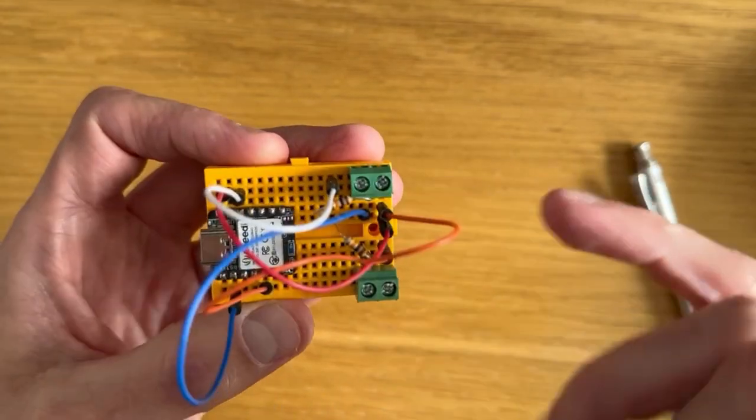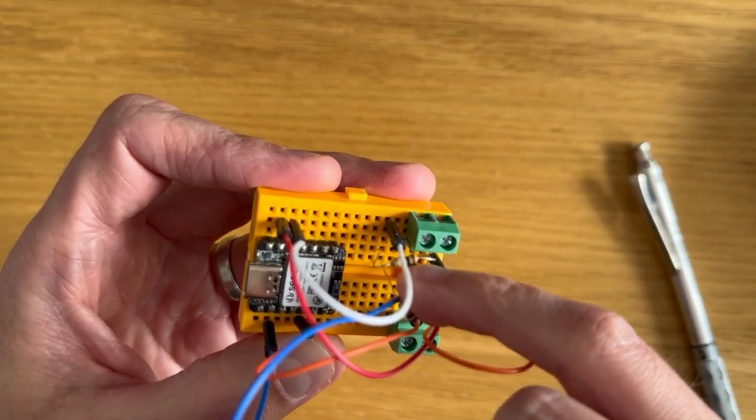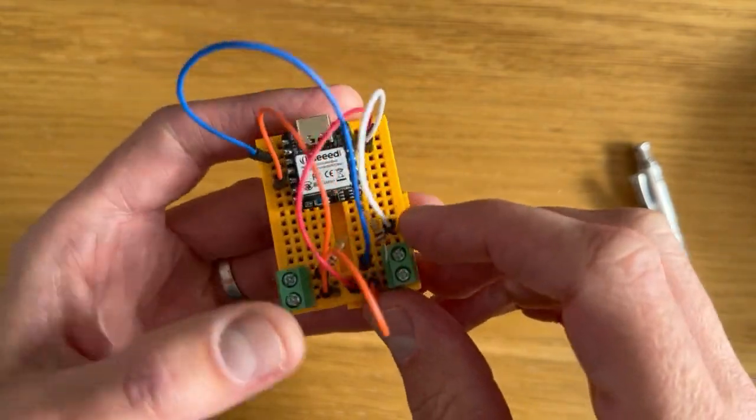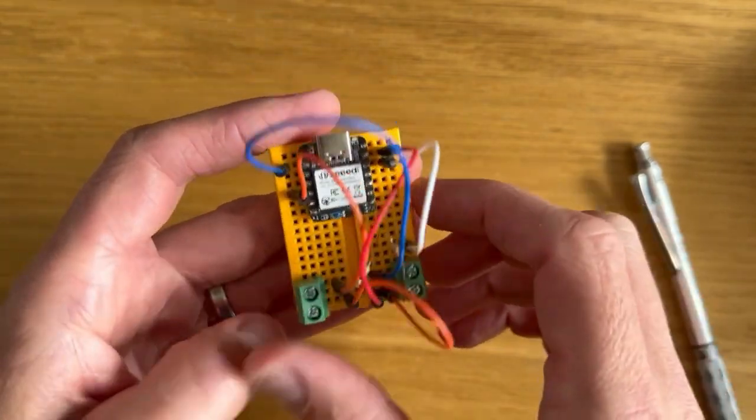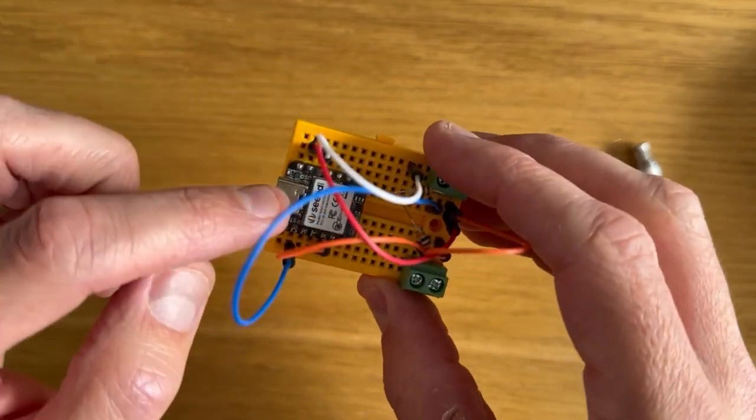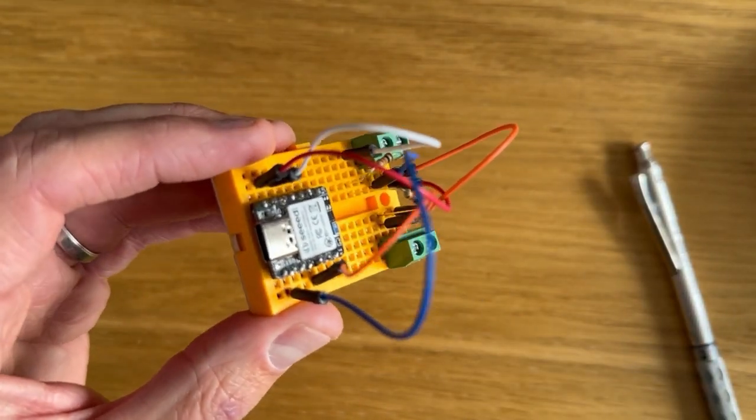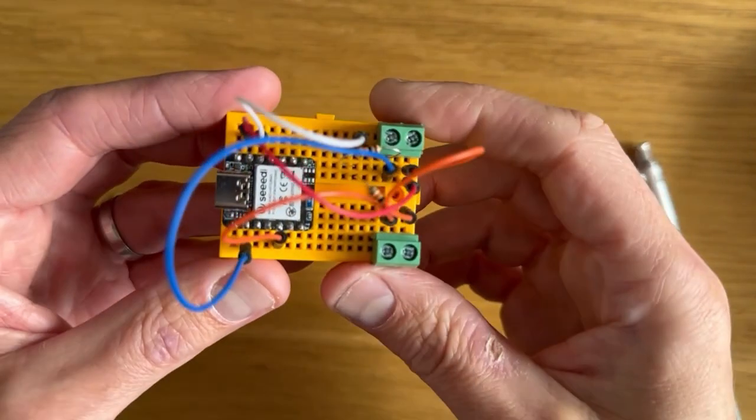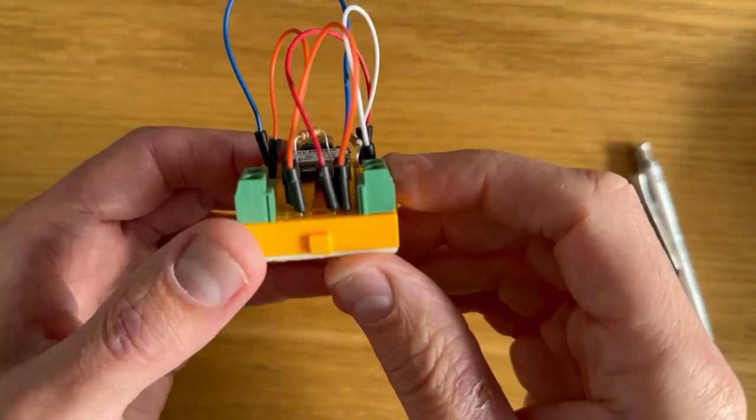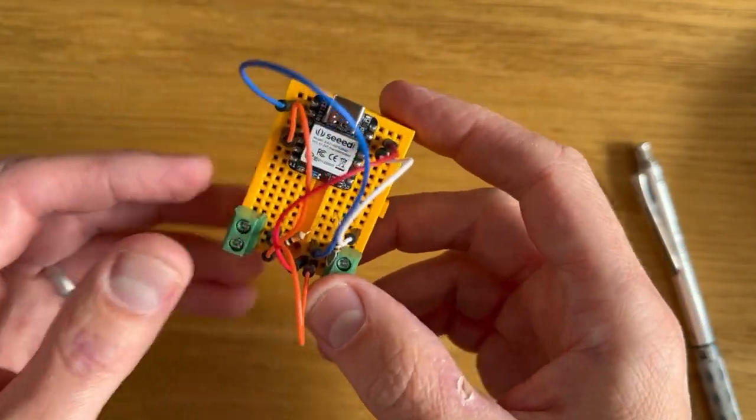So you can see that there's basically the two 10k resistors. There's one there and one there. They provide the voltage divider and then this little guy has a Bluetooth BLE radio in it so it simply broadcasts the readings from the two probes.